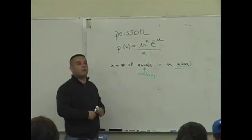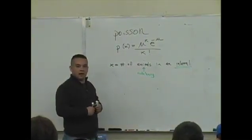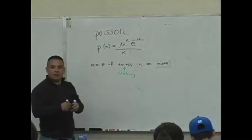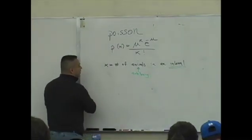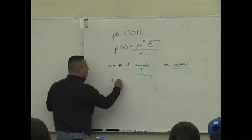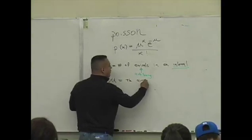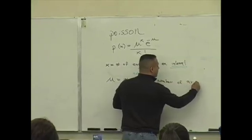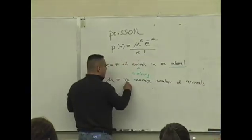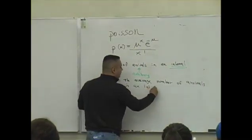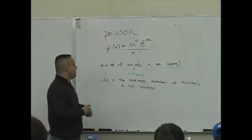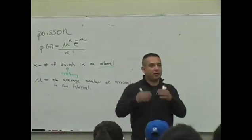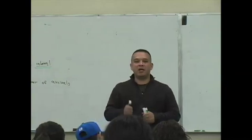An earthquake, a thunderstorm, a person — they can arrive. If we count arrivals, then we're talking about the Poisson probability formula. The second piece of information that you need is the value mu. Mu is the average number of arrivals in an interval. This distribution that has to do with arrivals is based on the expectation or the average number.